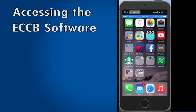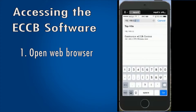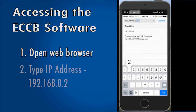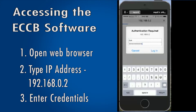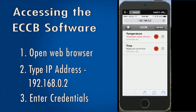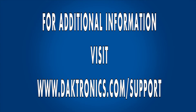To access the software for your Daktronics ECCB display, open your web browser and type in the display's IP address into the address bar. At the login screen, enter DAK for the username and then enter your password. The software for scheduling and creating messages should then show on your screen.